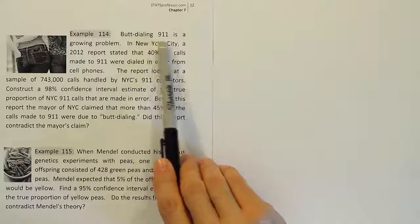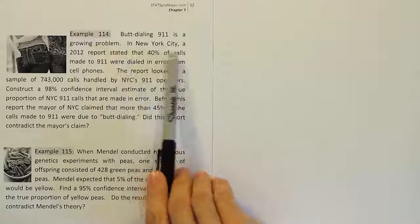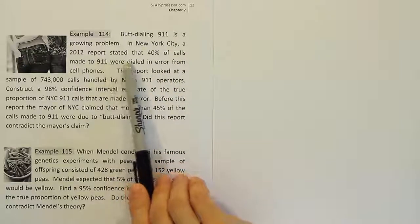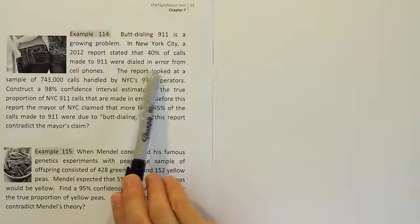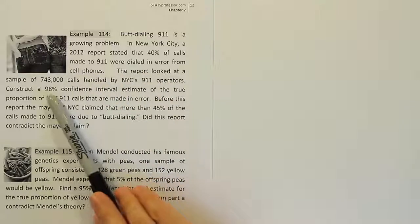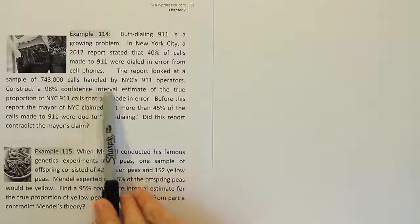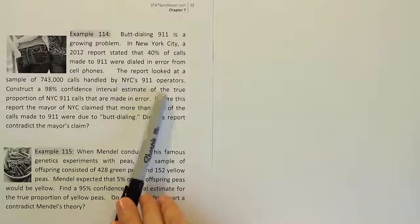Example 114: Butt dialing 911 is a growing problem. In New York City, a 2012 report stated that 40% of calls made to 911 were dialed in error from cell phones. The report looked at a sample of 743,000 calls handled by New York City's 911 operators.